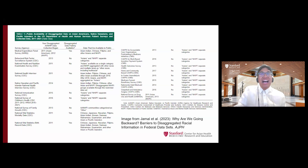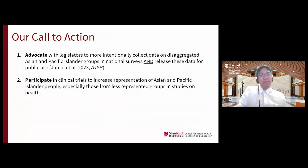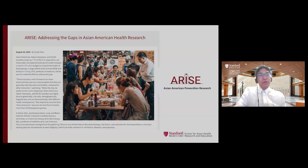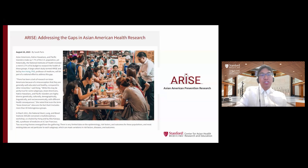Armand Jamal and colleagues highlighted some of these issues with respect to the availability of public use data, especially for different racial and ethnic groups. I also want our stories to be known, so I encourage you all to participate in clinical trials to increase representation of Asian Pacific Islander people, especially those from less representative groups. Here at Stanford, we have a new cohort called the ARISE cohort, which aims to enroll 2,100 Asian Pacific Islander individuals to better understand cardiovascular health. This will be part of a 10,000-person cohort, similar to the Framingham Heart Study, to understand individual and social factors that lead to differences in cardiovascular disease.